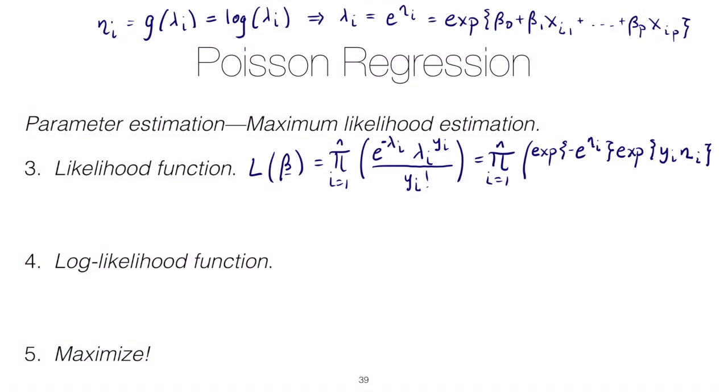And that's because we really should have, you know, our lambda i is equal to e to the eta i. And then we're raising that to the y i, so whenever we have, you know, exponent raised to eta i and an exponent, we multiply those things in the exponent together.